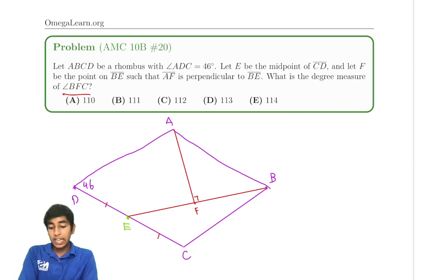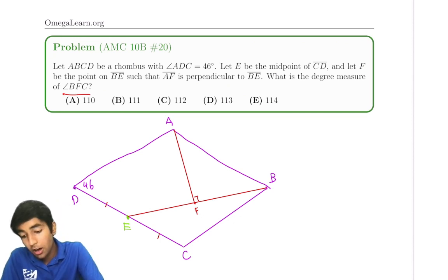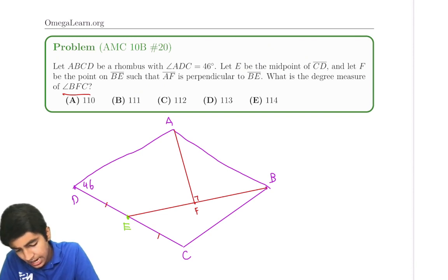So basically the idea for this problem is that our common approach is to just try angle chasing. Let it be variables - A, 90 minus A, I don't know, B. But it turns out that this is not enough.